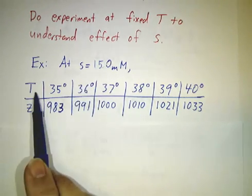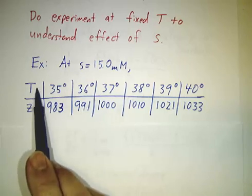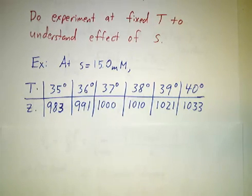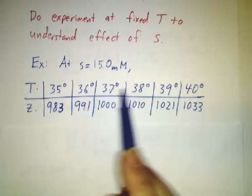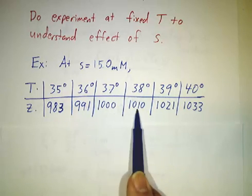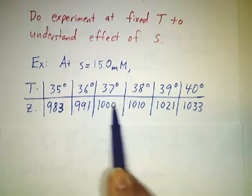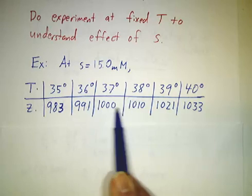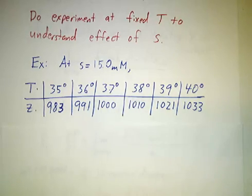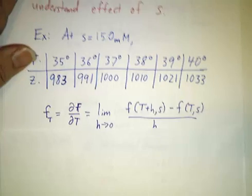For this fixed s, I've got the twists as a function of temperature and I can ask how fast it's changing. Between 37 and 38 degrees, the number of twists went up by 10. So the rate of change is approximately 10 twists per degree Celsius. And that's a derivative.